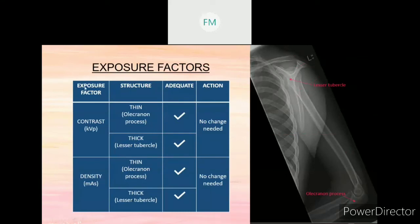For exposure factors: for kVp, the thin structure for lateral humerus is the olecranon process, and the thick structure is the lesser tuberosity. Both thin and thick structures show visible bony cortical outline. Therefore, no change is needed for kVp because the contrast is adequate. For density, the bony trabecular pattern of both thin and thick structures can also be seen. Therefore, no change is needed for mAs.